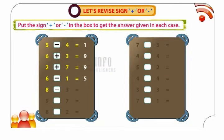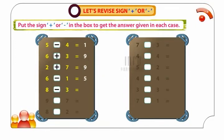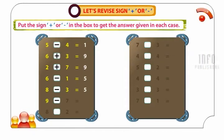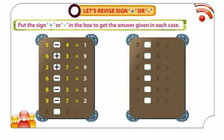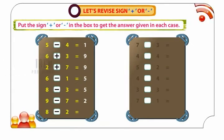8 minus 3 is equal to 5. 9 minus 7 is equal to 2. 8 minus 2 is equal to 6.